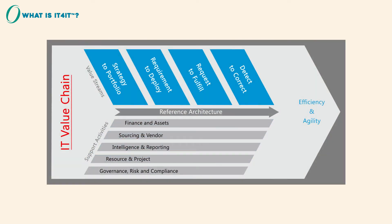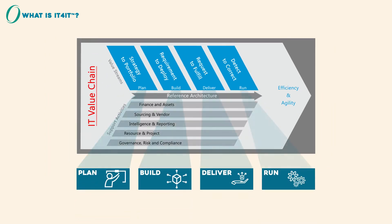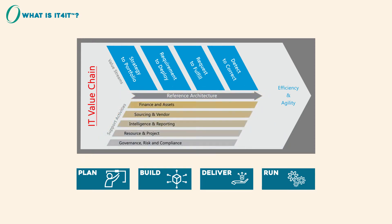The IT value chain comprises four major IT value streams which align to what IT traditionally calls plan, build, deliver, run. The standard is also made up of a three-level functional reference architecture and a set of supporting activities.